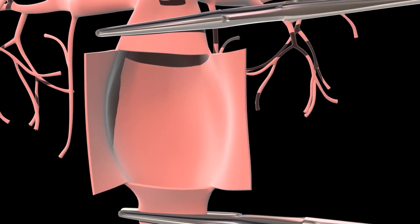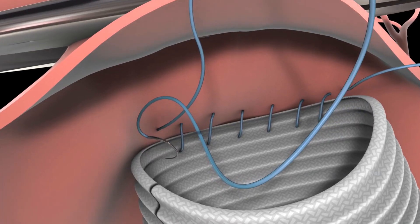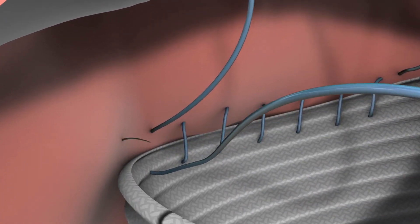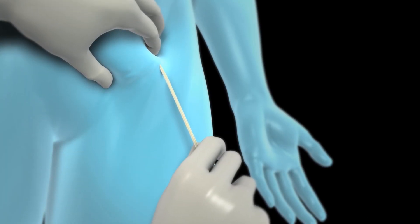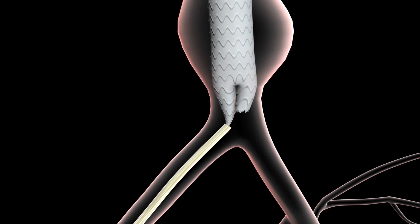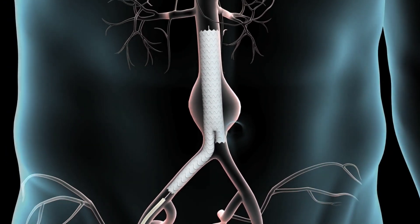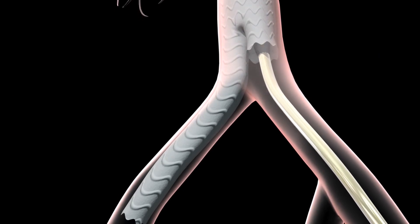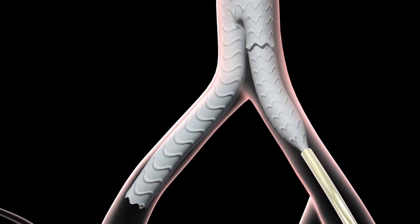Once an aneurysm reaches threshold to be repaired, there are two ways of fixing it. There is the traditional way, which is open repair, where we open up the aneurysm and replace the native aorta with a tube graft. Technology has come a long way, and we also do what's called an endovascular approach, where we go in through the femoral arteries with wires and catheters and reline the aorta from the inside with a stent graft, which essentially excludes the aneurysm from the circulation.